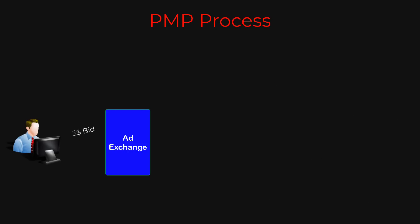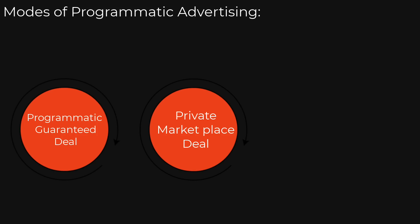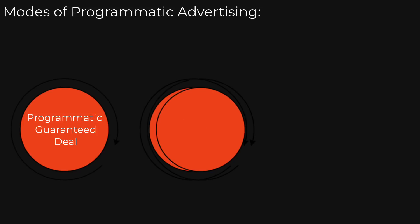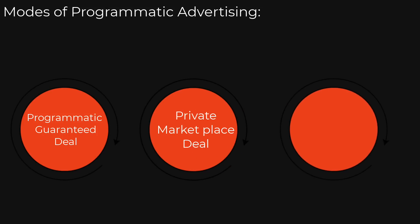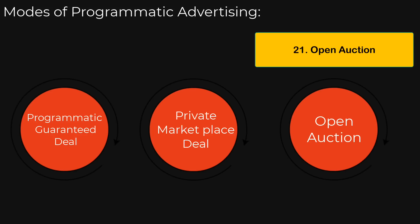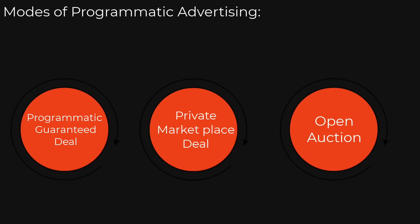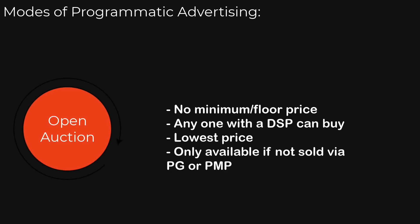If the publisher still has ad slots left after selling through programmatic guarantee deals and PMPs, this inventory is generally considered to be low quality and is called remnant inventory. To sell this, they resort to the third type of ad selling called open auction — it's called open auction because the publisher leaves it open and any advertiser using a DSP can buy this inventory, with no floor price set generally.